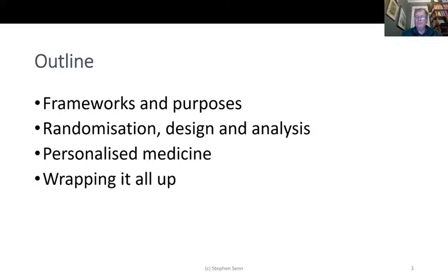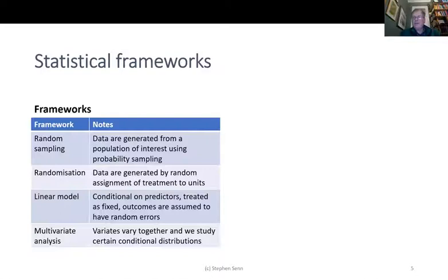Here are some possible statistical frameworks — by which I mean ways in which we imagine that the data arrive. Every statistician should always ask themselves: how did I get to see what I see? The way in which the data arise is very important. One framework, often taught in methods courses, is random sampling — we imagine the data are generated from a population of interest using probability sampling, most simply simple random sampling.